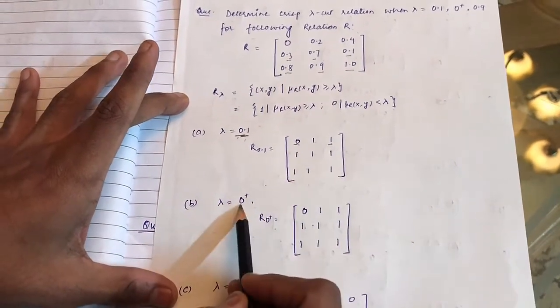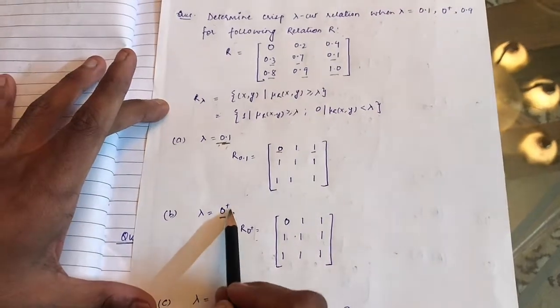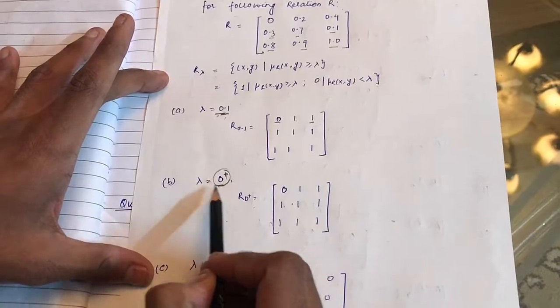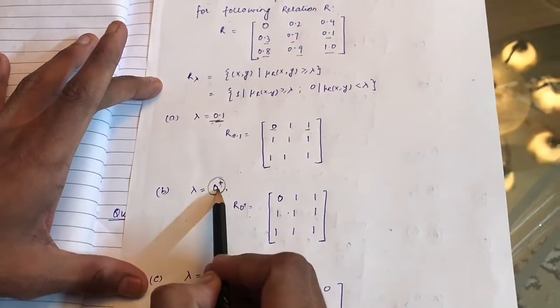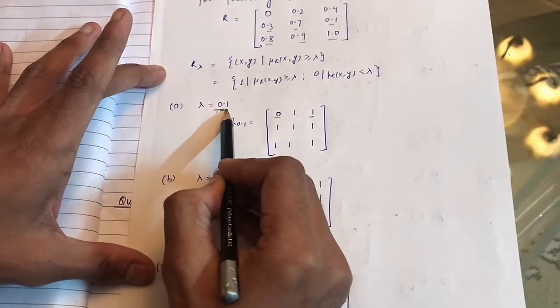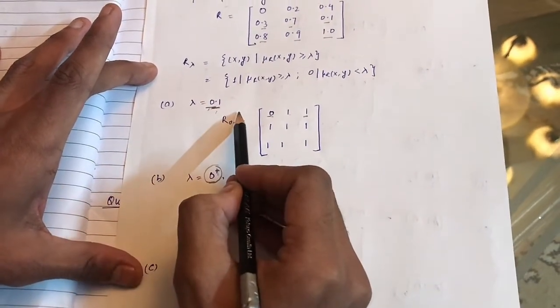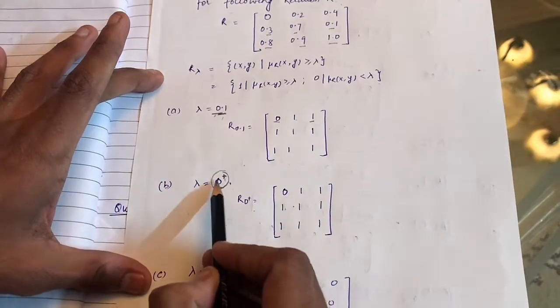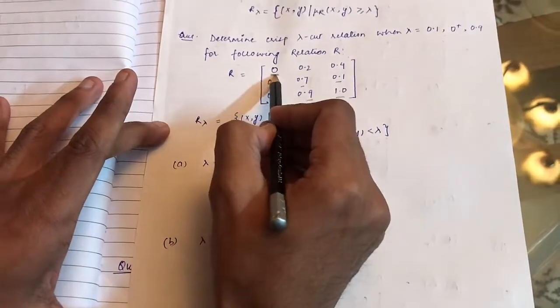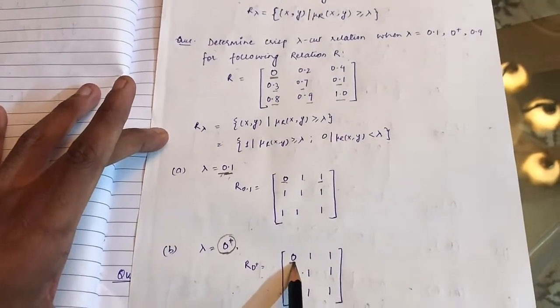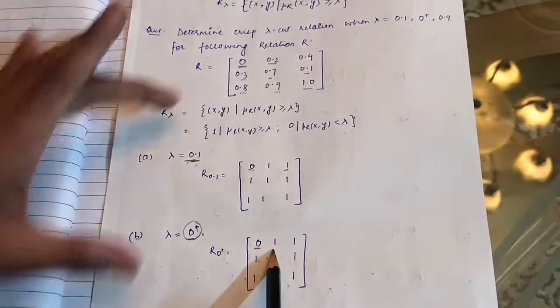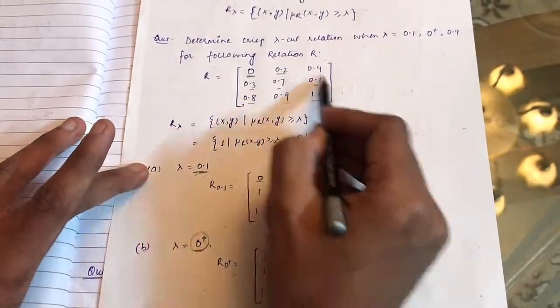For lambda equals 0+, what does 0+ mean? Plus means that we have to make all of the values that are greater than 0 as 1; we don't have to include 0. In 0.1 we are including 0.1 and all values greater than 0.1, but in 0+ we'll take only those values which are greater than 0. So 0 we'll leave it as 0 only, because plus sign indicates we have to take only the larger values. 0.2, 0.4, and all other values in this matrix—they are greater than 0, so we have made them as 1.